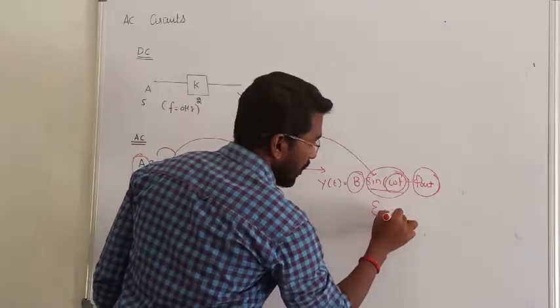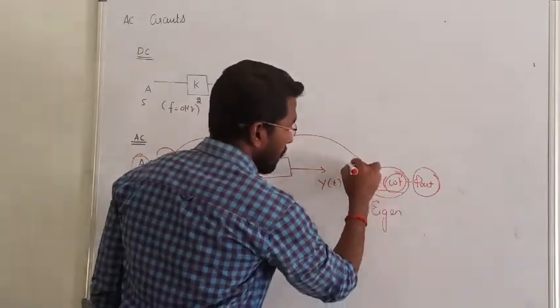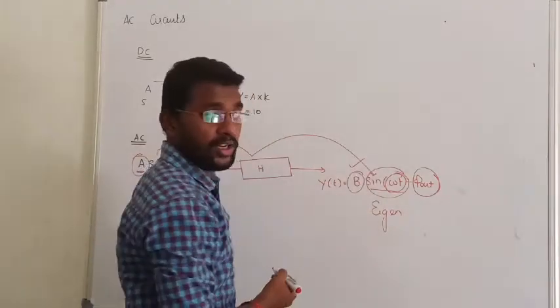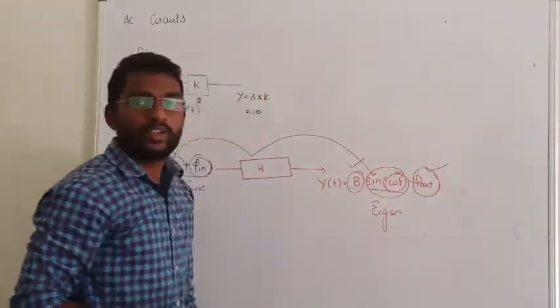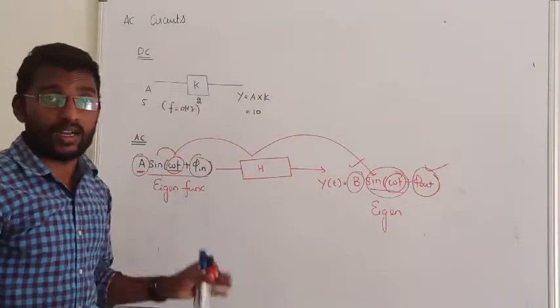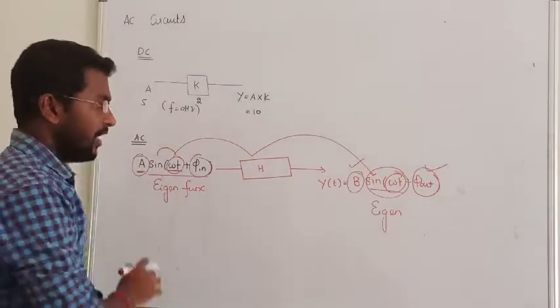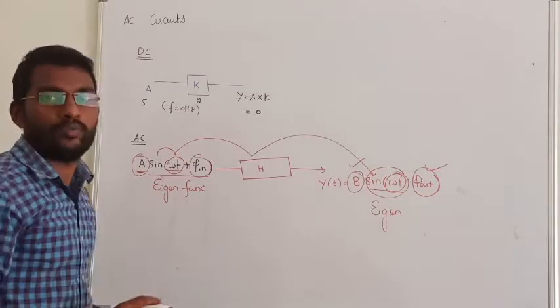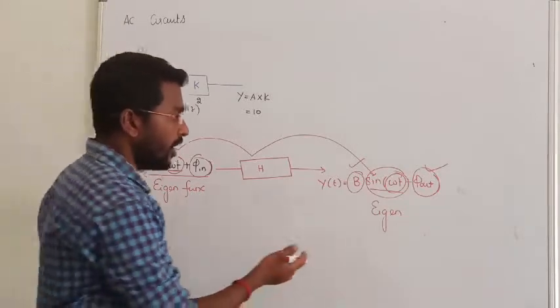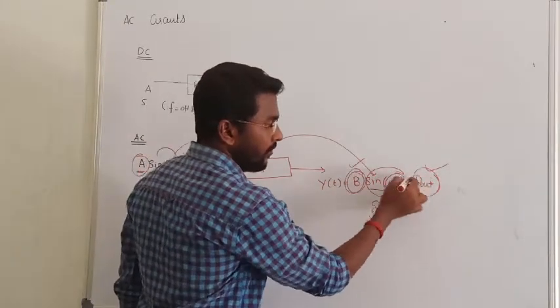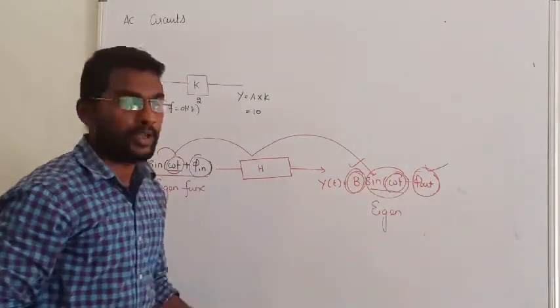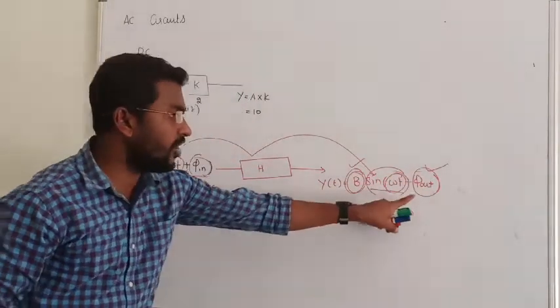The eigen function has a magnitude change and a phase angle change — that is AC analysis. This is the process of the entire problem. You can split it into two parts: magnitude and phase.